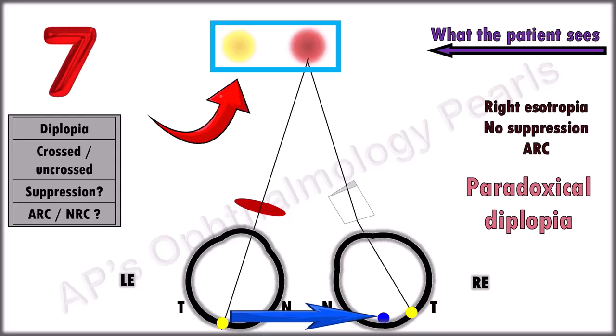Similarly, an exotropia with prism correction will show an uncrossed diplopia if there is ARC.